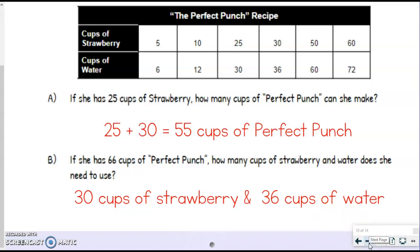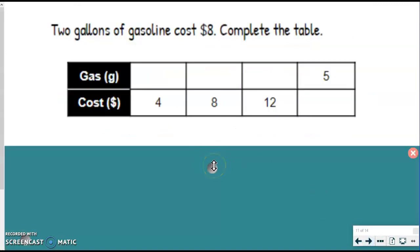Here is one more way we're going to do this section. That was our interpreting. This is our solving. So now we are going to have a word problem here that's going to help us complete this table. We have two gallons of gasoline cost $8, and we need to use that to complete the table.